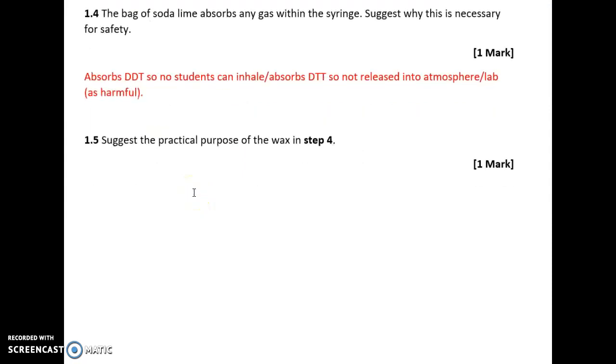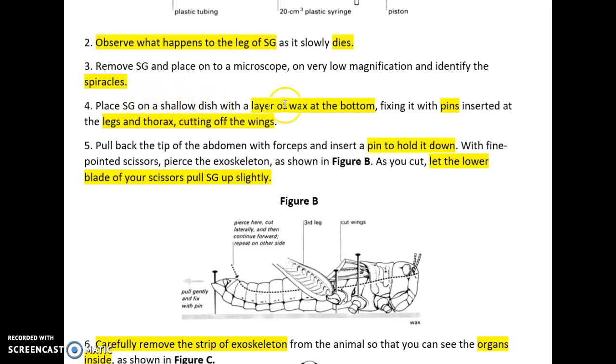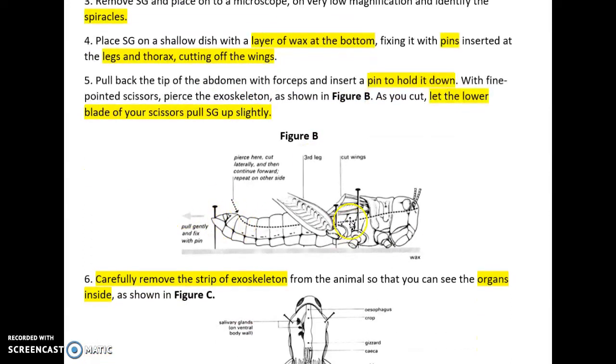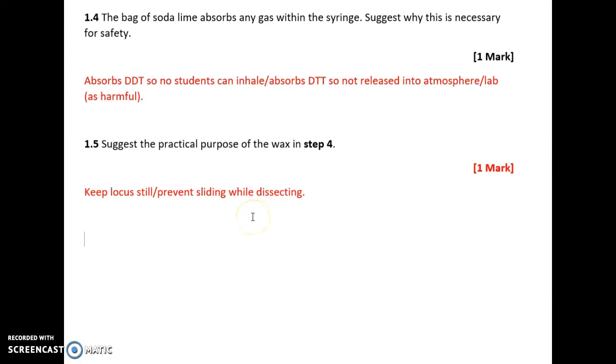Suggest the practical purpose of the wax in step four. Place SG on shallow dish with a thin layer of wax at the bottom, fixing it with pins inserted at the legs and thorax, cutting off the wings. If we use the figure, what do we logically think that a layer of wax could be used for? It's probably being used to keep the locus still and keep it in place so that it doesn't move along with the pins. The practical purpose of the wax is to prevent the locus from sliding while dissecting.